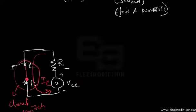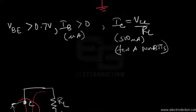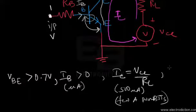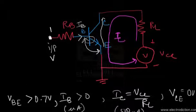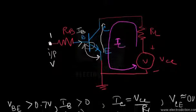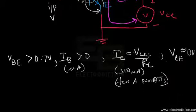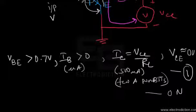Since the BJT behaves as a closed switch, the voltage across its collector and emitter terminals, VCE, would be approximately zero volts. This is condition 1. When the transistor operates under condition 1, it is said to be in the ON state — like a mechanical switch that conducts current when closed.